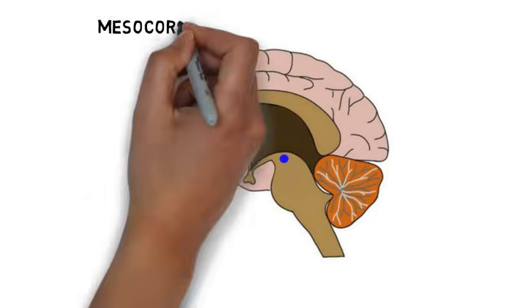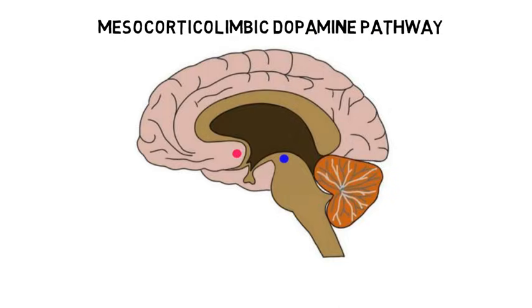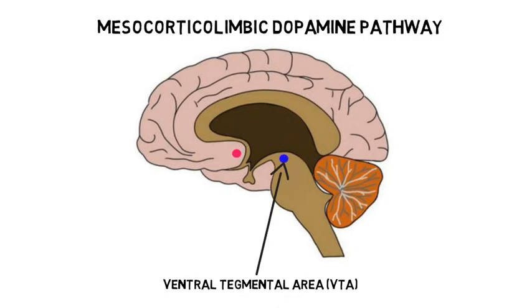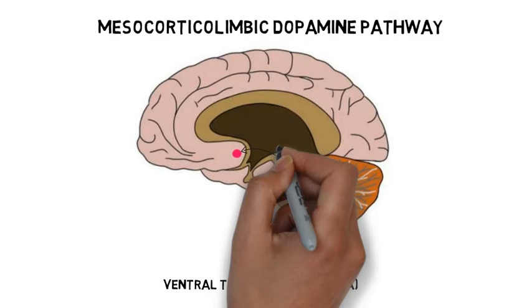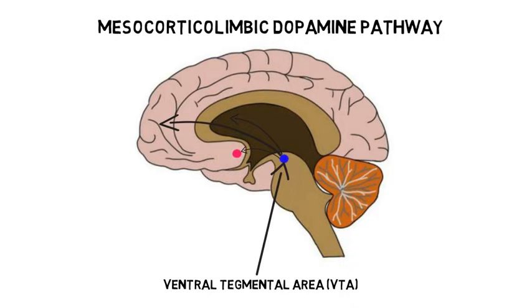The mesocortical and mesolimbic dopamine pathways, which are sometimes called the mesocorticolimbic dopamine pathway, are pathways that are rich in dopamine neurons. They project from a dopamine-rich region in the brainstem called the ventral tegmental area to a variety of locations in the limbic system and frontal cortex.